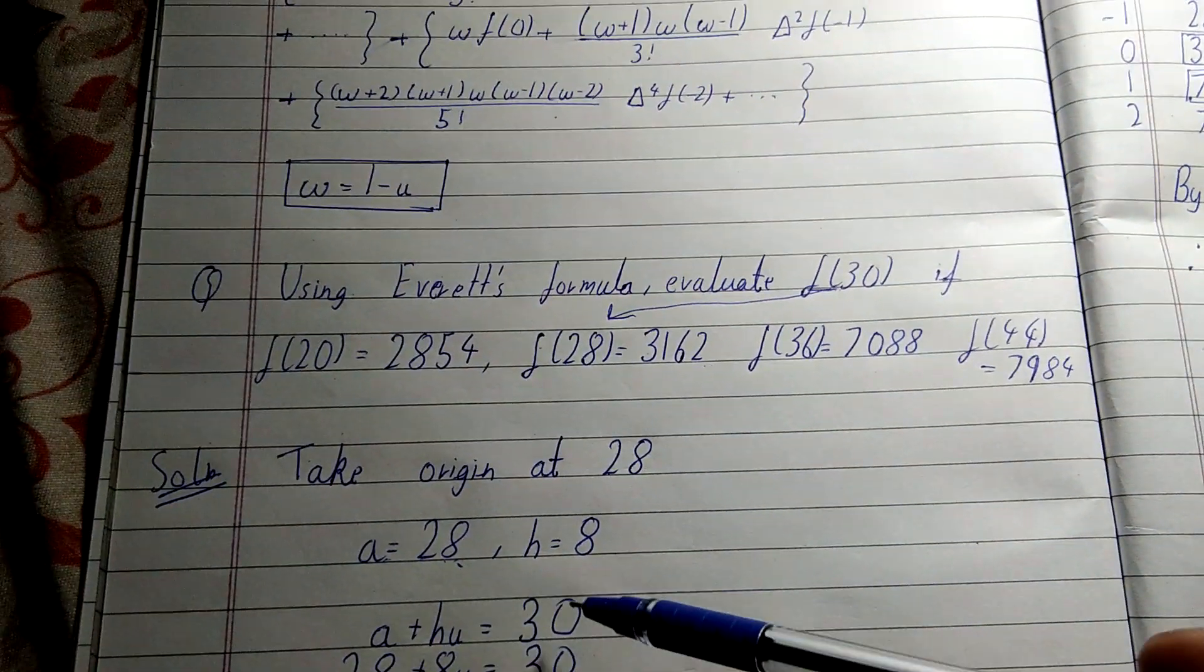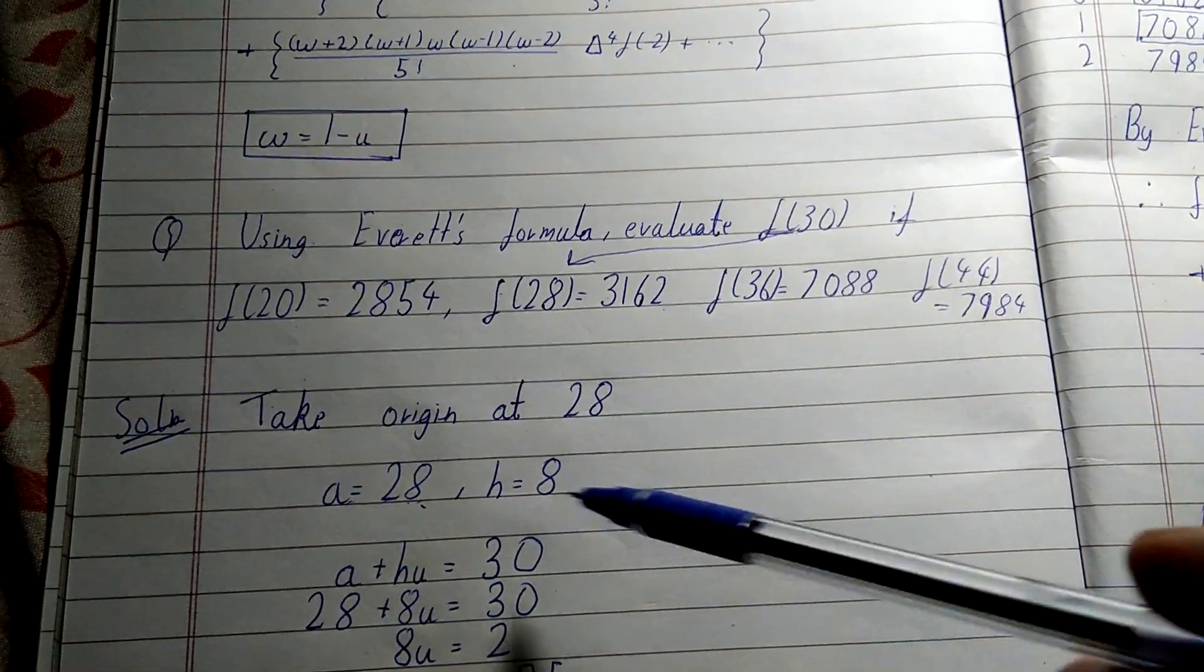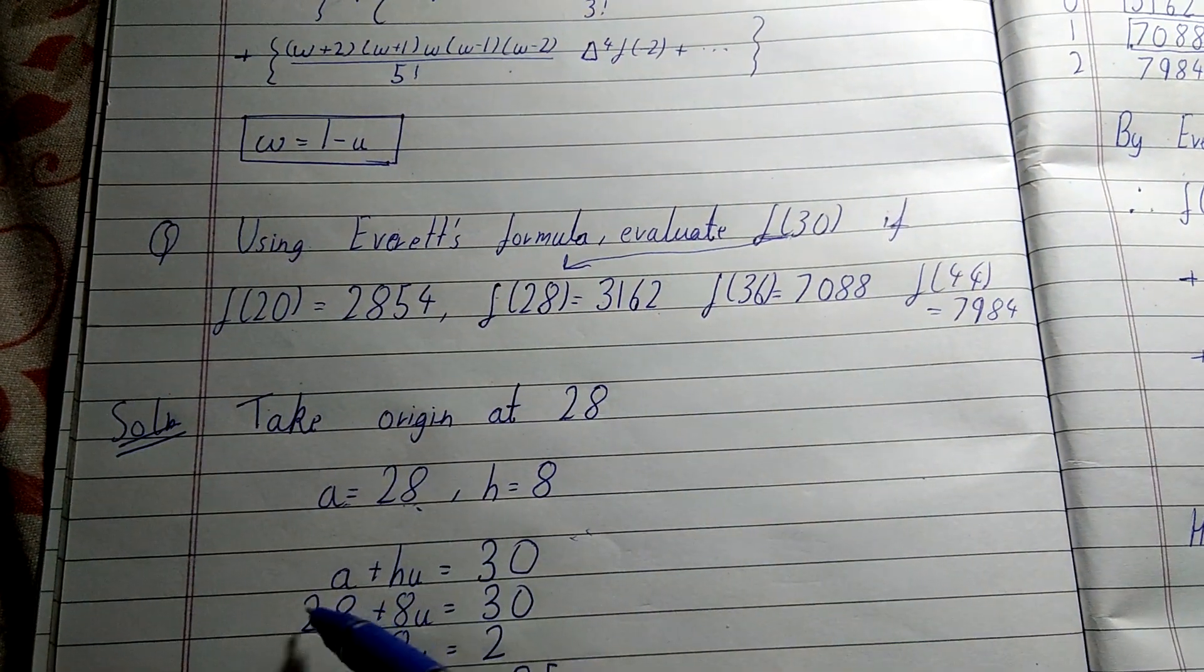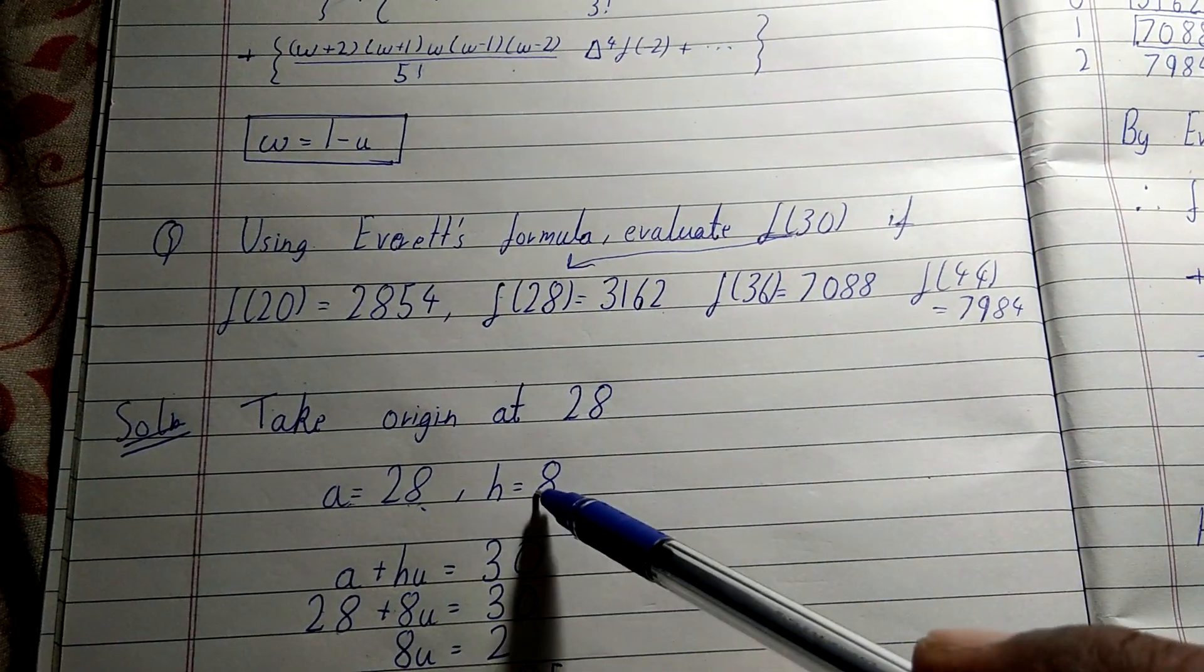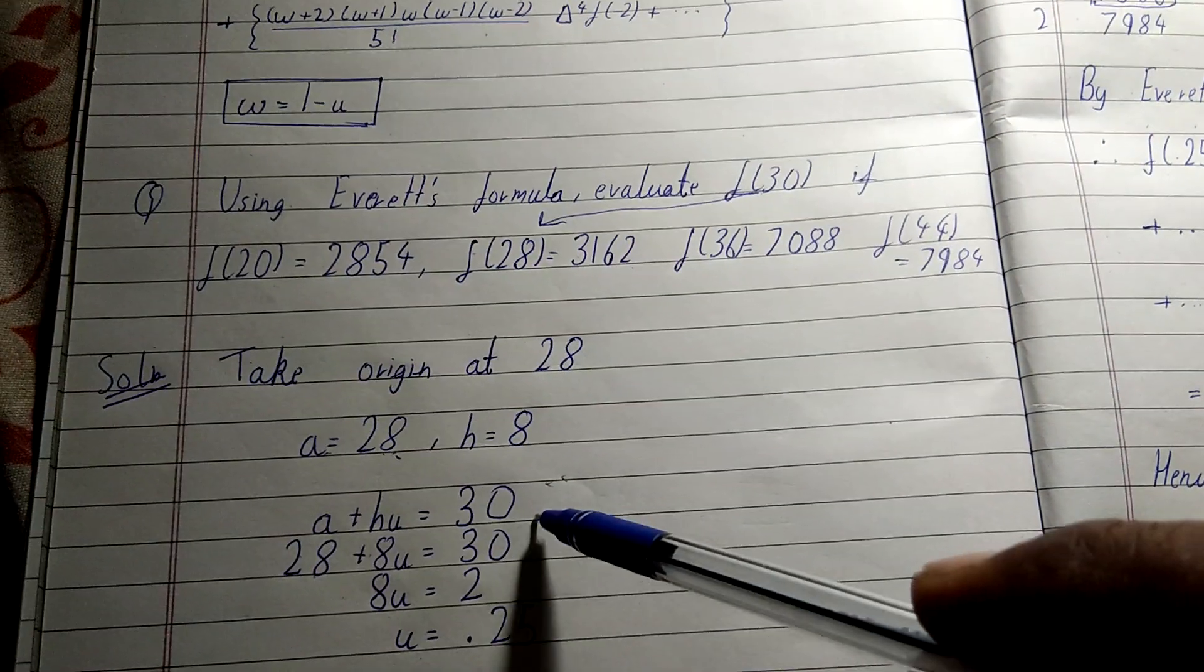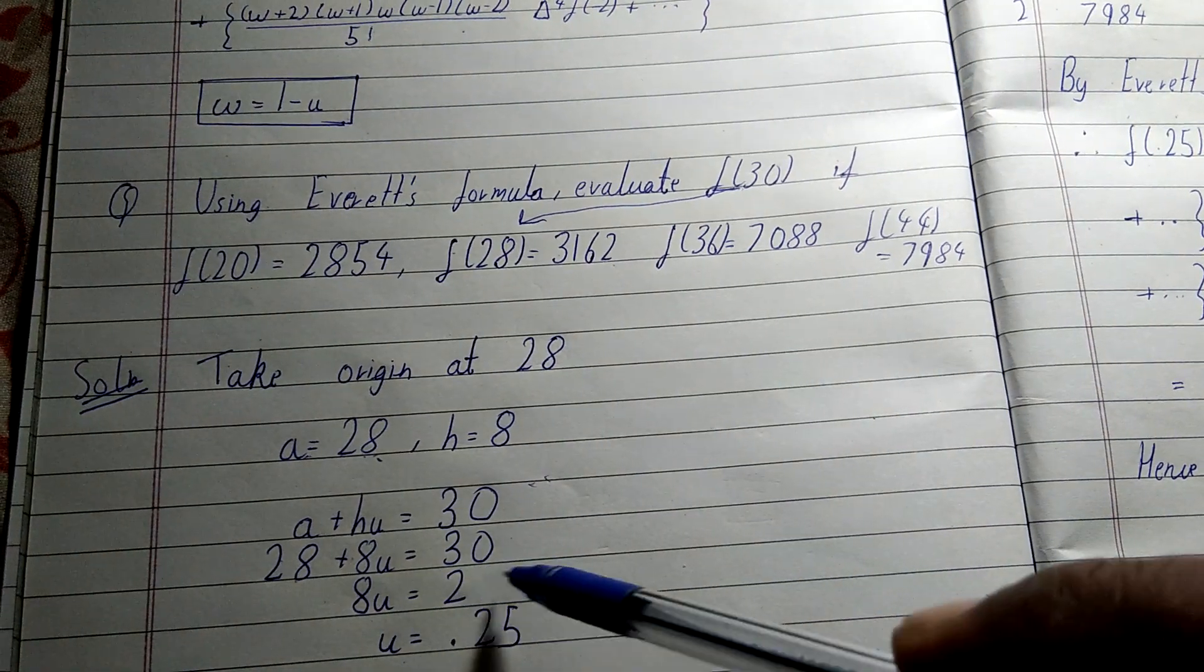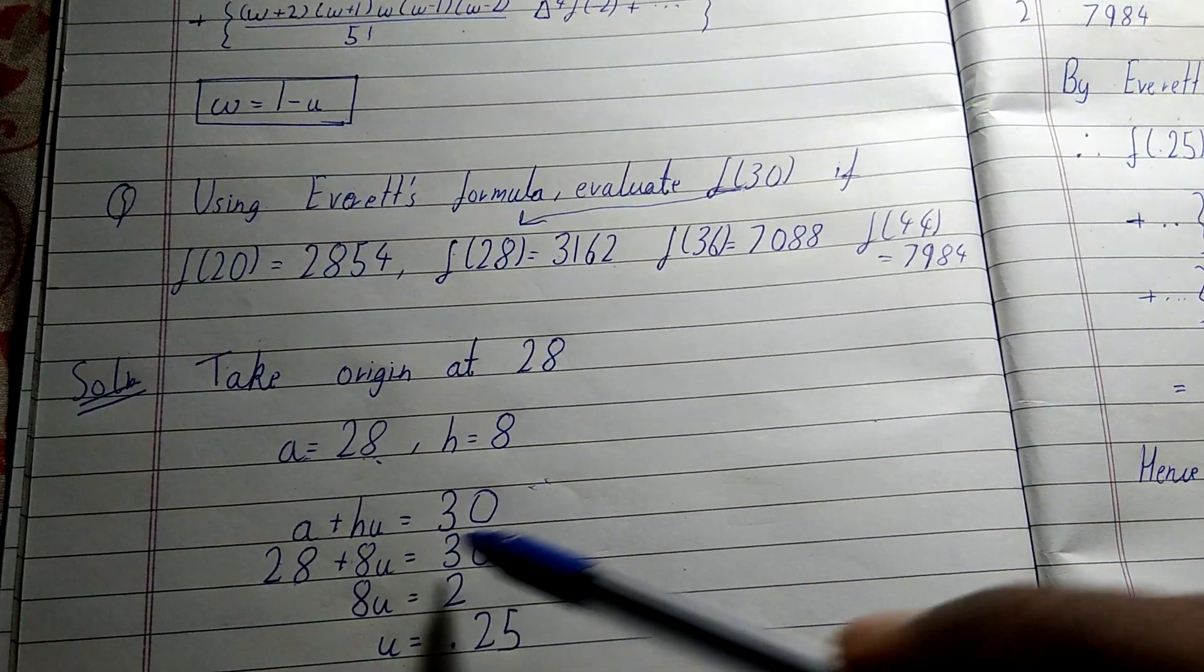So a + h·u = 30. 30 is what we have to find out. 28 is the initial value. 28 + 8u = 30, so 8u = 2, therefore u = 0.25.